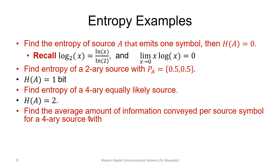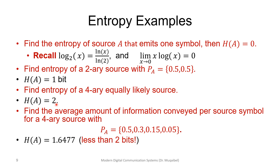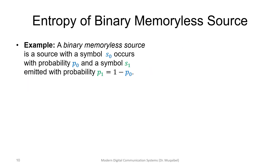What if the four-symbol source has unequal probabilities? Then we have less uncertainty because some symbols are more probable. Going through the entropy equation with those unequal probabilities, we expect the answer to be less than two bits. The result is approximately 1.6477 bits, which is as expected less than two.